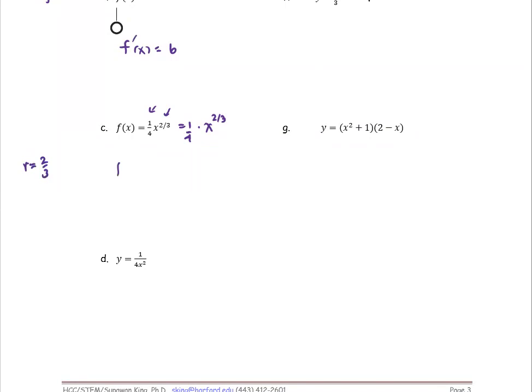To find the derivative for the constant multiple, the constant term remains as it is. What you work on is the derivative of the power form. The power 2/3 becomes a coefficient of the derivative, and the new power is the original subtracted by 1.